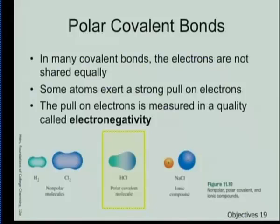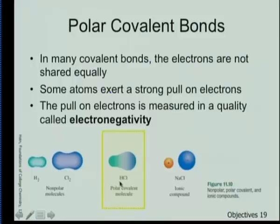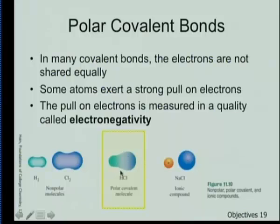Unequal sharing comes down to this term we call electronegativity — the amount of pull on electrons. With two hydrogens sharing electrons, one is not pulling any more than the other, so those electrons spend equal time by each hydrogen. With two chlorines sharing electrons, the shared electrons spend equal time on each side — it's an equal custody situation of those electrons.